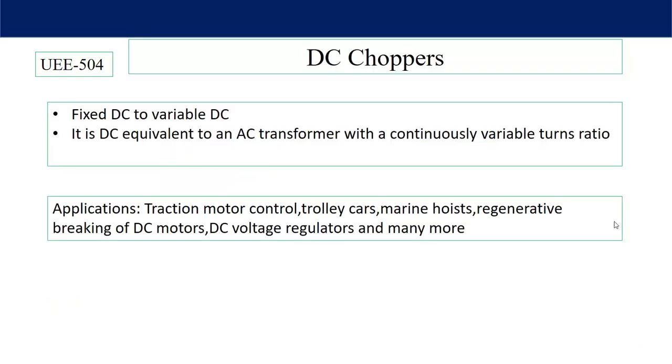DC choppers convert fixed DC to variable DC. It is DC equivalent to an AC transformer with a continuously variable turns ratio. As in case of transformer, output voltage can be increased or decreased by changing the turns ratio. Here similar thing is available, but in case of DC, we are not changing the turns ratio. We will change the duty cycle of the switches.